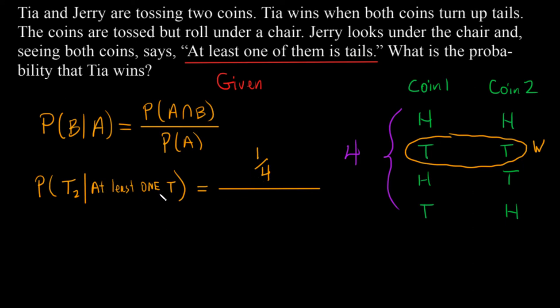And if our probability in the bottom here is at least one being a tail, there are three different ways that that can occur here, here, and here. So there is a three out of four probability or 75% probability that at least one is a tail. And that's what was given to us. So that's why it goes into this formula.